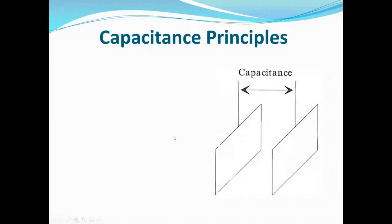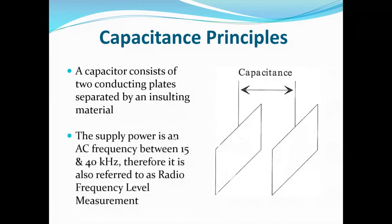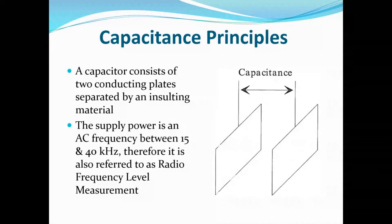Here's the parallel plate style capacitor — two plates with AC voltage applied between them that causes ions to go back and forth. Process medium goes in between. When the tank is empty, it's air between the plates. When the tank is full, there's typically a fluid, or possibly a solid, in between these plates. Whatever that material is will have an effect on the capacitance generated between the plates. That's the science behind it — AC frequency between 50 and 40 kilohertz, which is why capacitance is sometimes referred to as radio frequency level measurement.